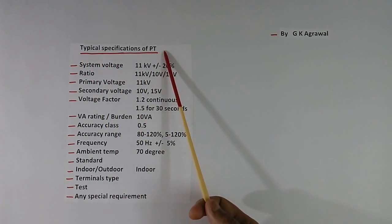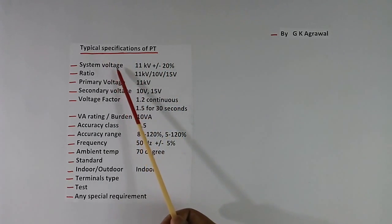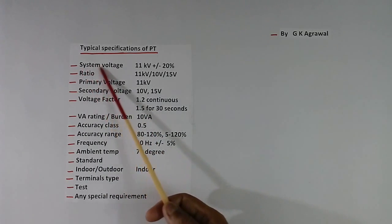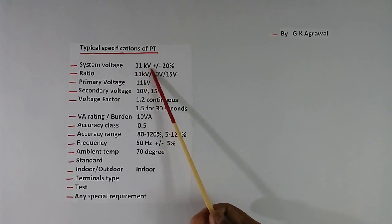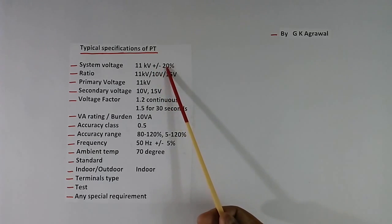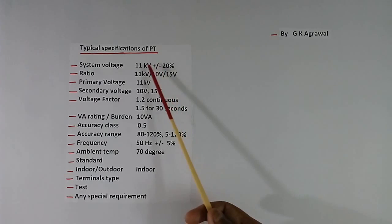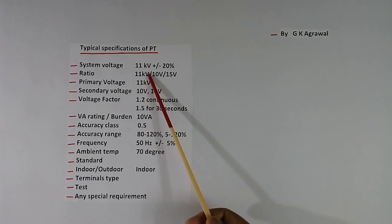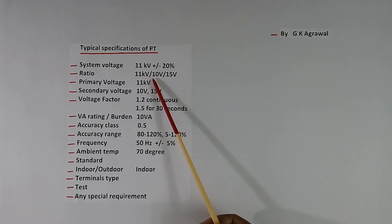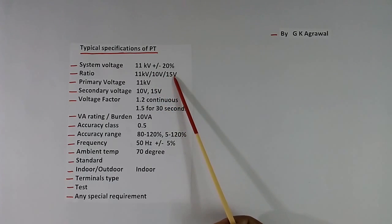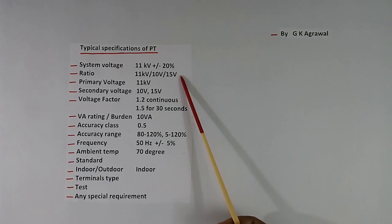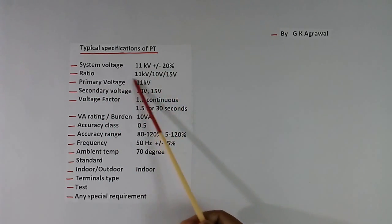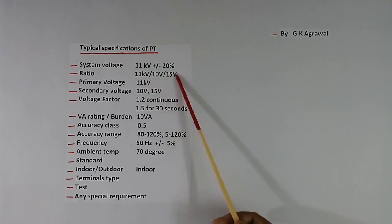Now we come to typical specifications. First, we have to give the system voltage — what is the voltage and what are the variations. The more the variation, the more expensive the transformer will be. Then the ratio — for example, primary voltage 11 kV. The secondary may have 2 windings: one may be 10 volts, another may be 15 volts. If you want a 3rd winding, you can specify that too. PT can have many secondary windings.